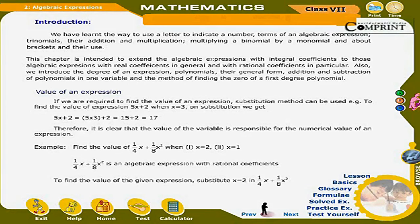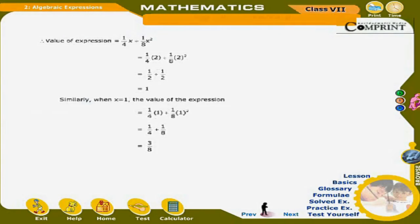Example: Find the value of (1/4)x + (1/8)x² when x = 2. The expression (1/4)x + (1/8)x² is an algebraic expression with rational coefficients. Substituting x = 2, the value of the expression = 1/(4×2) + 1/(8×2²) = 1/2 + 1/2 = 1.